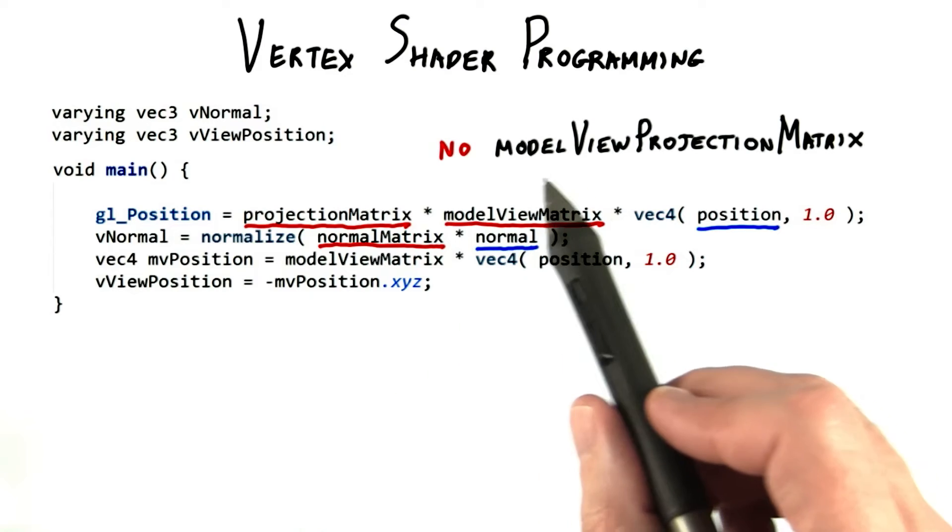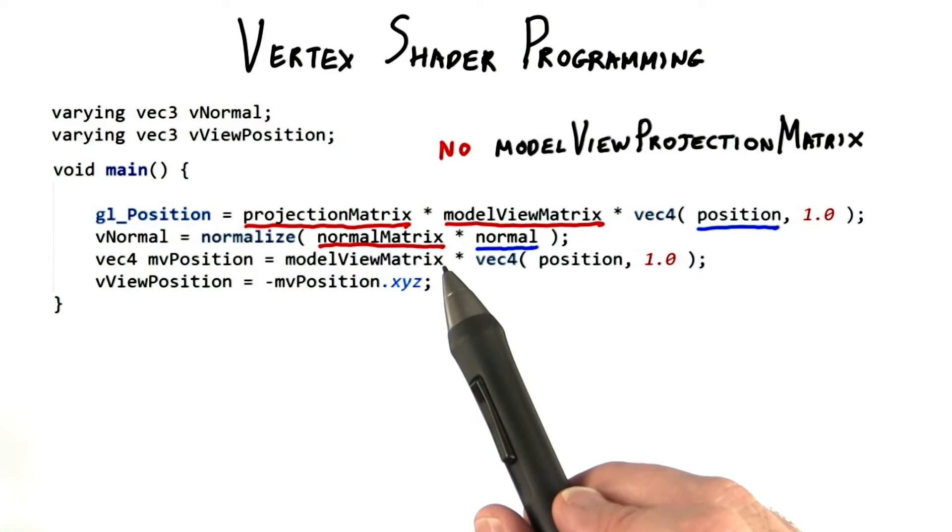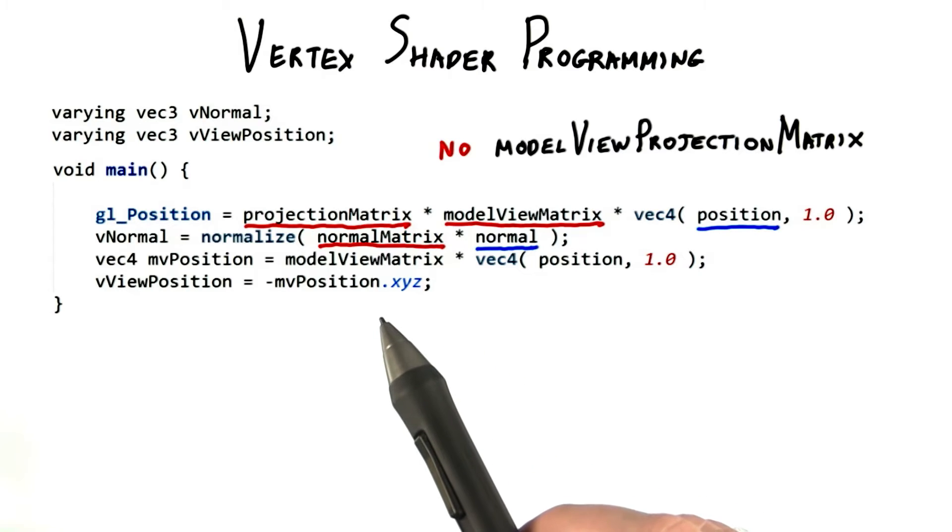There's currently not a model view projection matrix of these two matrices multiplied together. Maybe you'll be the person to add it to 3JS, as it's commonly used and would be more efficient to use here.